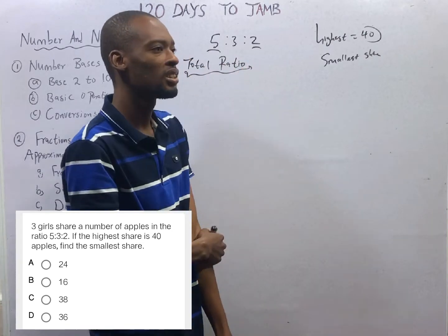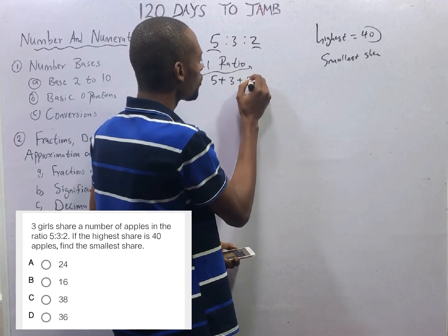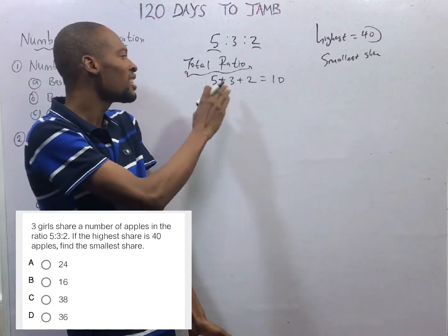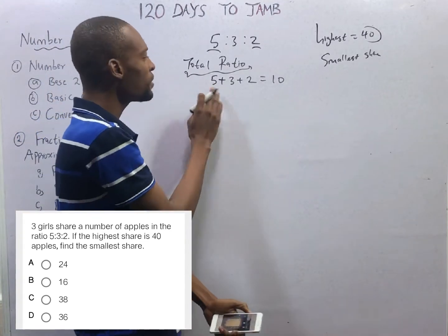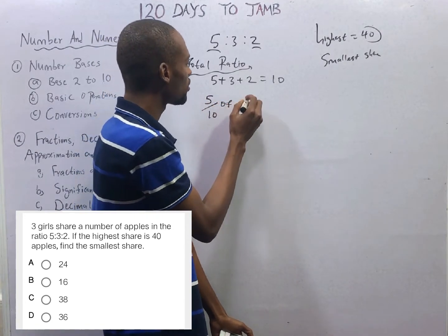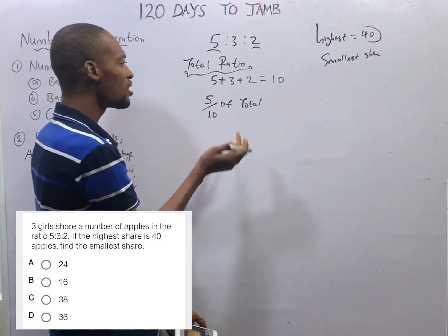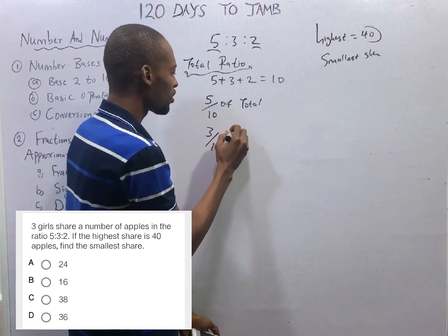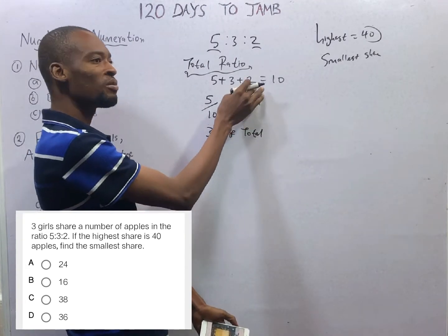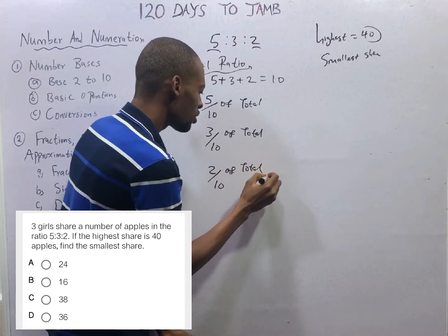Step 1: find the total ratio. The total ratio is 5 plus 3 plus 2, and this is 10. If this is the total ratio, the girl with ratio 5 simply takes 5 over 10 of the total. The person with ratio 3 takes 3 over 10 of the total apples. The one with the least ratio takes 2 over 10 of the total.